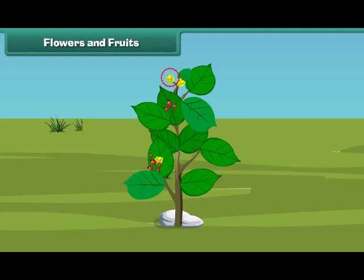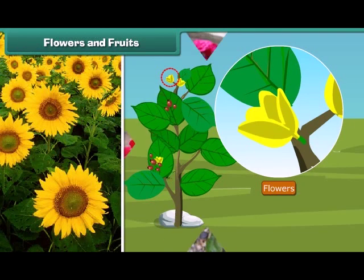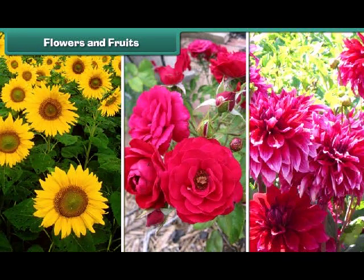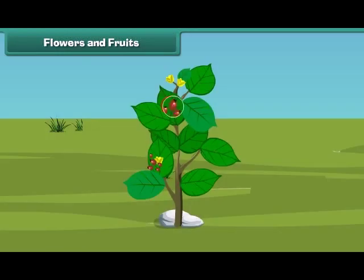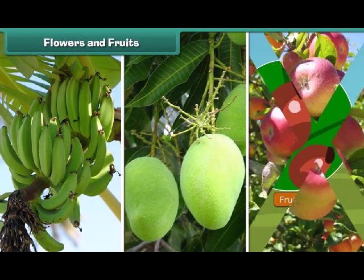Now let us know about the most attractive and most beautiful part of the plant. Yes, that is the flower. Flowers are of different colors and types like sunflower, rose and dahlia and so on. I know that most of you also like fruits. Fruit is the juicy part of the plant. Fruits come in different shapes, sizes and colors like banana, mango, apple and oranges.